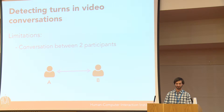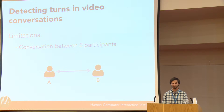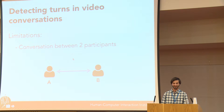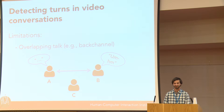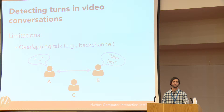This approach has two limitations. First, in conversations with only two participants, the primary video feed does not change, so we can't detect turns in dyadic conversations—only three or more participants. Second, the video feed changes after a short delay when a participant begins speaking, so it's not possible to detect overlapping turns or backchannel. For example, if someone says yes or mm-hmm while someone else is talking, we can't detect that.